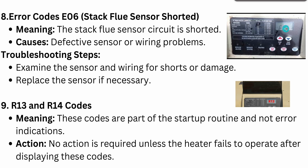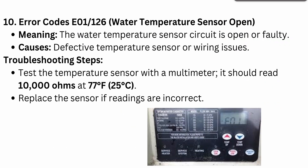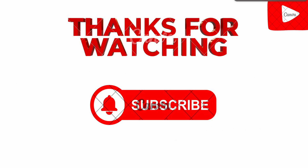Error codes E01 and E26 indicate water temperature sensor open, meaning the water temperature sensing circuit is open or faulty. Causes include a defective temperature sensor or wiring issues. To troubleshoot, test the temperature sensor with a multimeter — it should read 100 ohms at 77°F (25°C). Replace the sensor if the readings are incorrect.